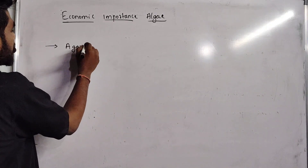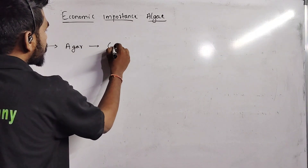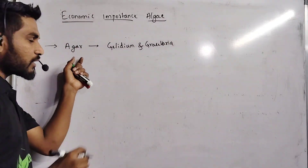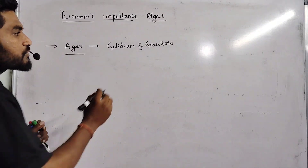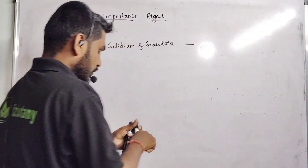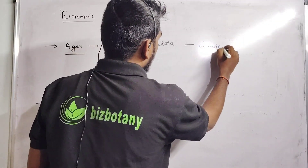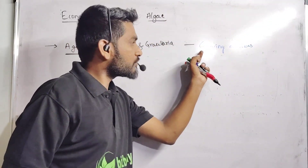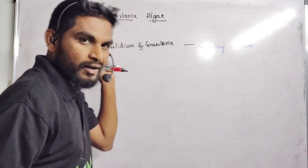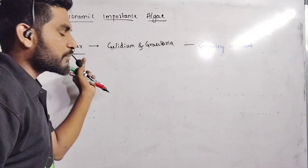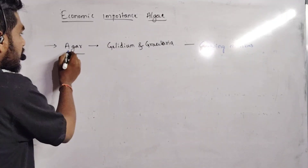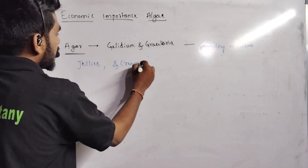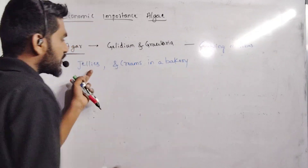Next, agar powder is prepared from algae like Gelidium and Gracilaria. This agar product is used for growing up microbes — for growing fungi and bacteria, we utilize agar-agar powder, which acts as a solidifying agent in the preparation of culture media. Other than that, agar is also used for the preparation of jellies and creams in bakeries.